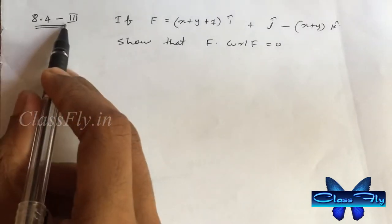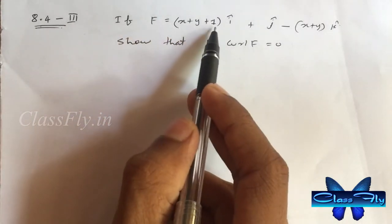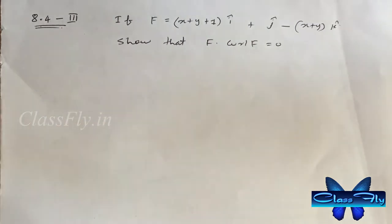Exercise 8.4, third question. If f equals x plus y plus z i cap plus j cap minus x plus y k cap, show that f dot curl f equals zero.